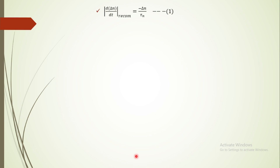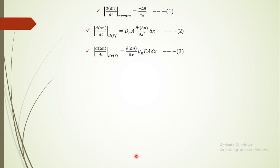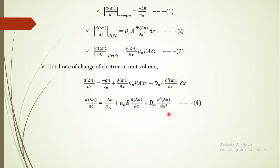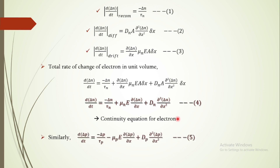To find the total rate of change, we sum contributions from all three factors — Equations 1, 2, and 3. Since A · delta x is volume, considering per unit volume gives us the electron continuity equation (Equation 4). Similarly, substituting p for n gives the hole continuity equation (Equation 5). Equations 4 and 5 together are called the electron-hole continuity equations, and all parameters have their usual meanings.